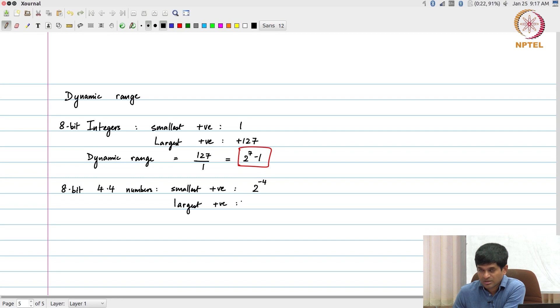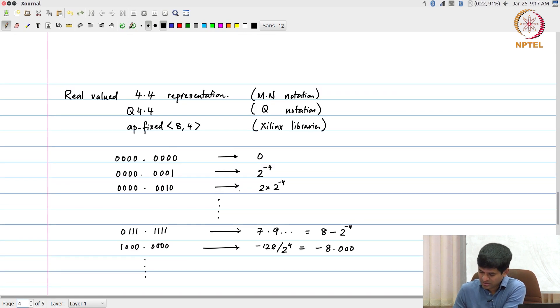Largest was 7.9 something, which if you remember was actually equal to 2 power 3 minus 2 power minus 4. It is basically 8 minus 2 power minus 4. I have 4 bits for this one. I am talking about this notation over here, this value. There will be 4 bits before the decimal point, maximum value can go up to 7.